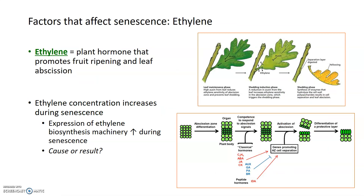Some other factors that affect senescence are plant hormones. Specifically, one hormone we're going to discuss is ethylene, which is a pretty simple hormone — it is a gas. It's usually associated with promoting fruit ripening as well as leaf abscission. Ethylene gas is the reason why you can put a banana next to some avocados to ripen them; bananas give off a lot of ethylene gas and promote fruit ripening. Abscission is the regulated separation of leaves from the stems of plants, and that is also controlled by ethylene.